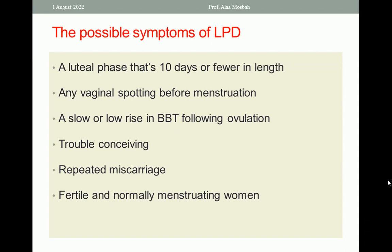What are the possible symptoms of Luteal Phase Deficiency? First, it may be asymptomatic and the lady may be fertile and normally menstruating. Or she may have a Luteal Phase of 10 days or fewer in length, vaginal spotting before menstruation, slow or low rise in basal body temperature following ovulation, inability to conceive, and repeated miscarriage.